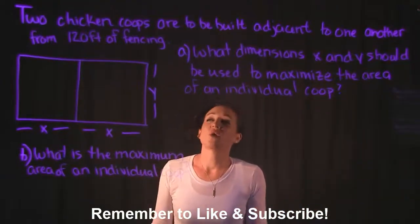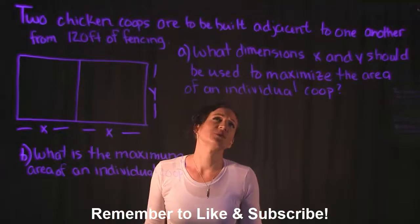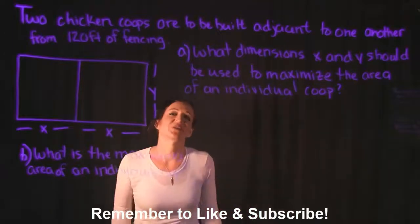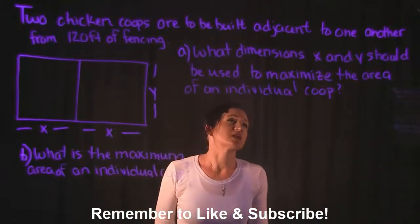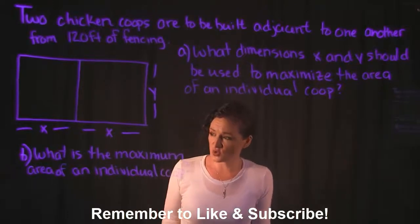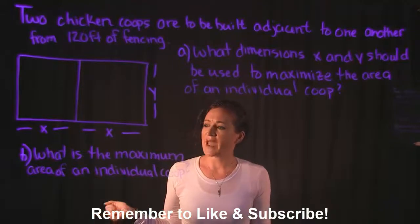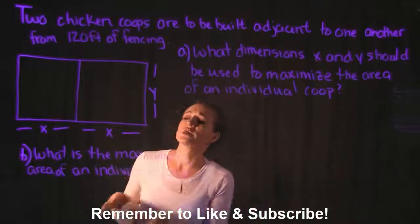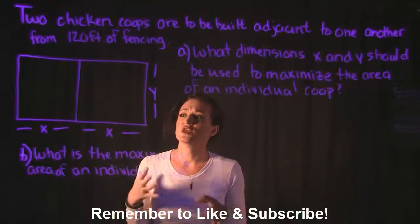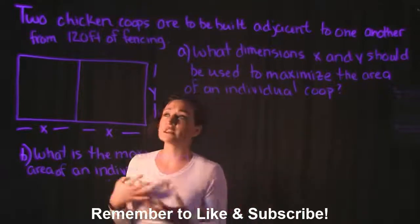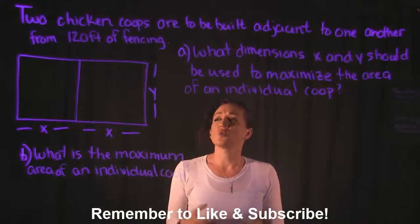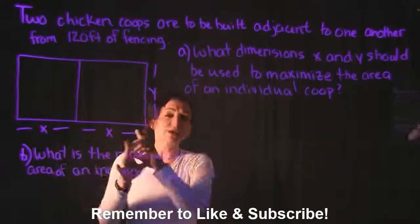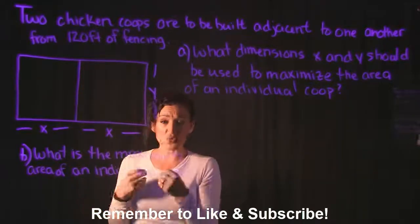For this video, the question says two chicken coops are to be built adjacent to one another from 120 feet of fencing. We have two questions: what dimensions X and Y should be used to maximize the area of an individual coop, and what is the maximum area of an individual coop? We have 120 feet of fencing and we want to create two chicken coops from it, making them as big as possible.